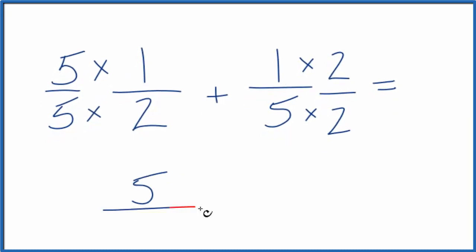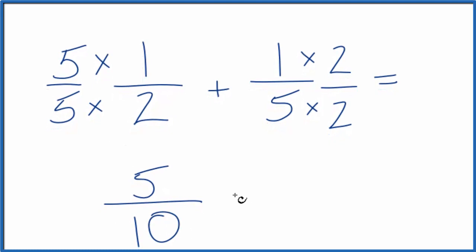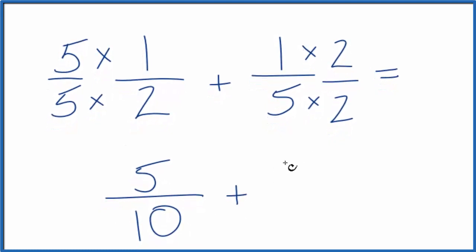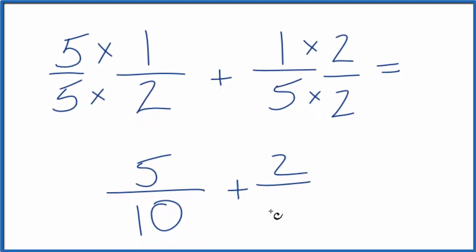Five times one is five, five times two is ten, plus one times two, that's two, and five times two is ten.